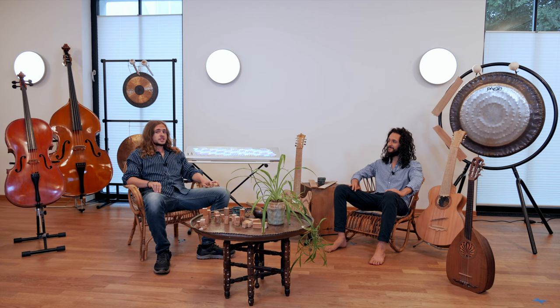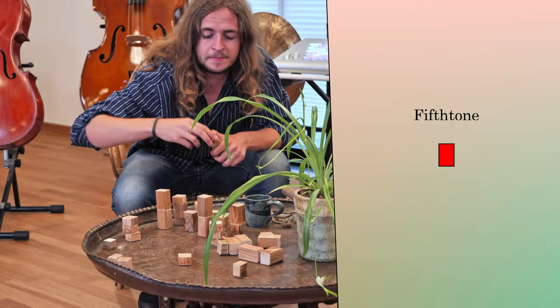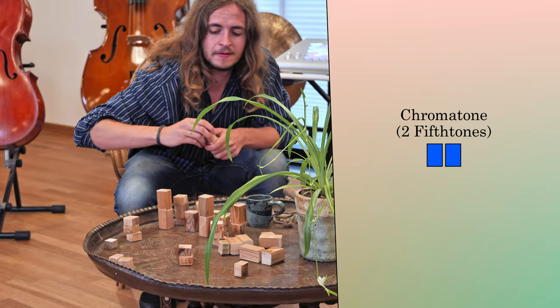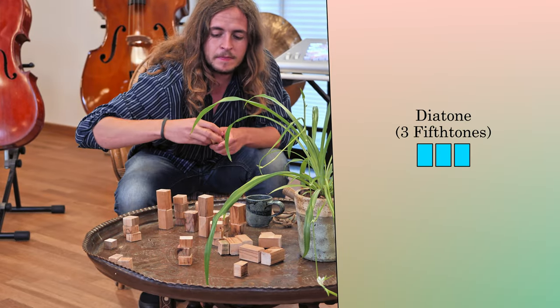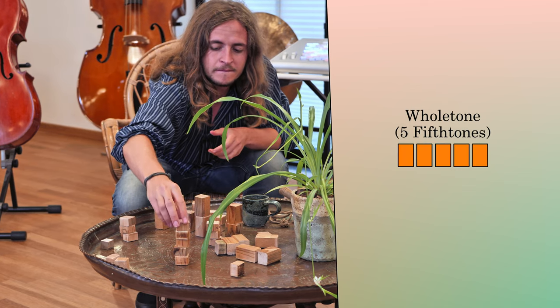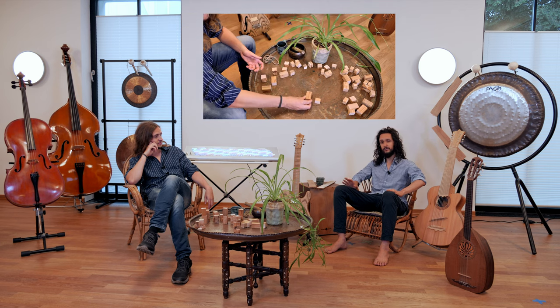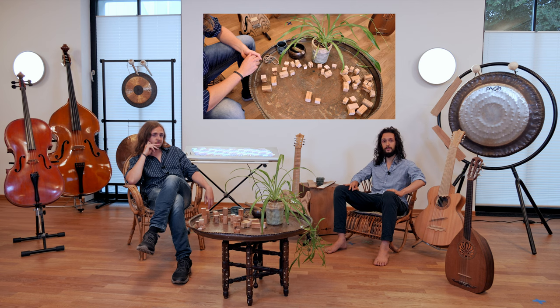In 31TED, the smallest step size is the fifth tone, or daiesis. Why fifth tone? Because 31 splits its whole tones into five equal parts. The step names are: fifth tone, chromatone, diatone, neutral tone, and whole tone. The fifth tone is only about 40 cents in size, and therefore around 60 cents smaller than the 12TED semitone.